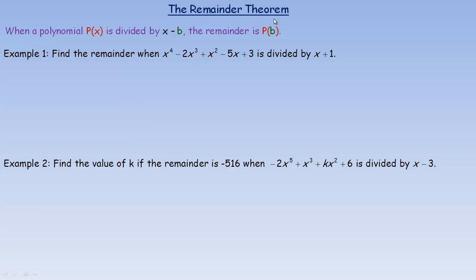In this video we'll take a look at the remainder theorem and how it can be used to find remainders in algebraic divisions. The remainder theorem says when a polynomial p is divided by x minus b, the remainder is p(b). Notice it says x minus b, so it's x minus some number.